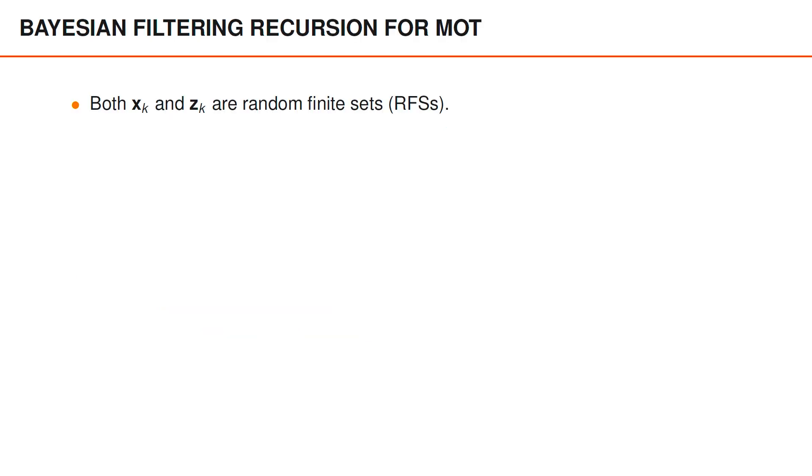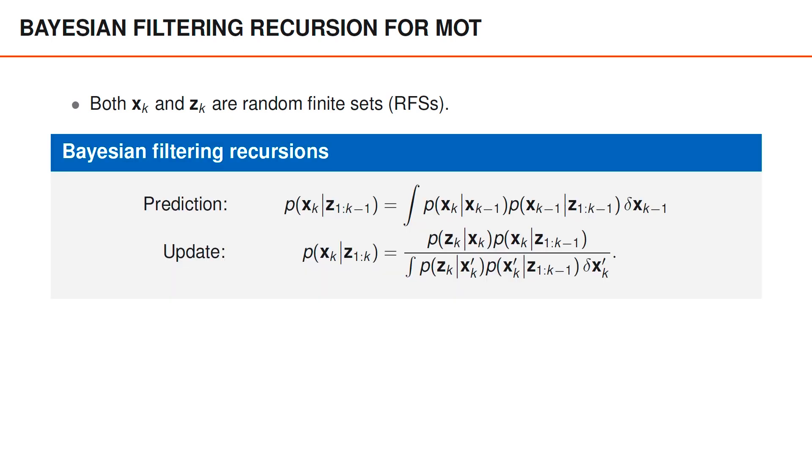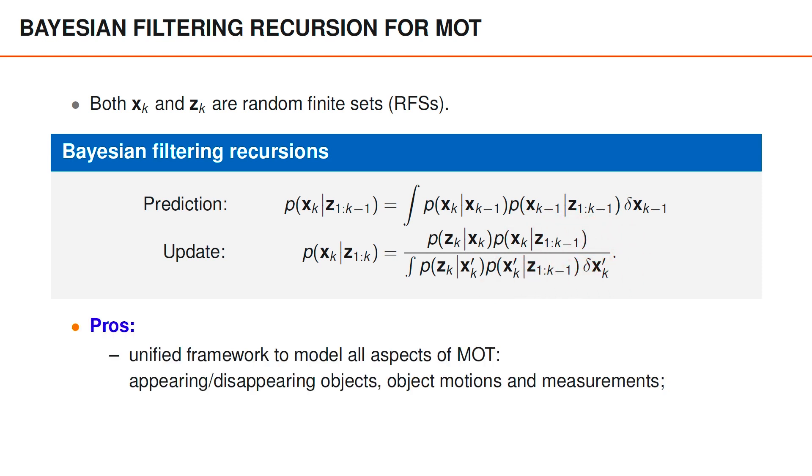From now on, we assume that both the states and the measurements are sets. To describe our uncertainties in these sets, we model them as random finite sets. This means that we have uncertainties in both the number of elements in the sets and the elements themselves. On a conceptual level, the Bayesian filtering recursions are still performed in the usual manner, where we use the Chapman-Kolmogorov equation for prediction and Bayes' rule for update. We've already mentioned a few arguments for representing the state as a set. Now, apart from those arguments, describing both the states and the measurements as random finite sets gives us a uniform framework that we can use to model all aspects of multi-object tracking.